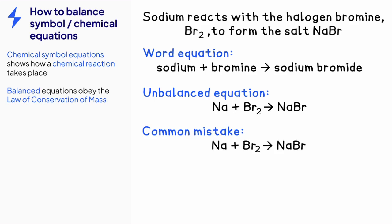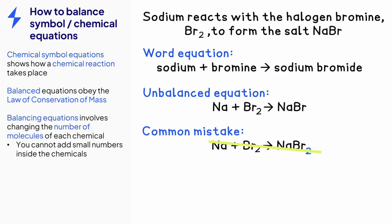A common mistake when balancing equations, like this one, is to put a small 2 on the NaBr, but this changes the chemical and is incorrect. You can only put big numbers in front of the chemicals to change the number of molecules.